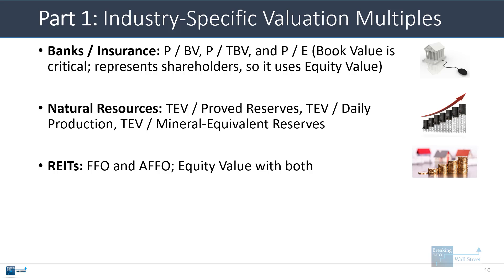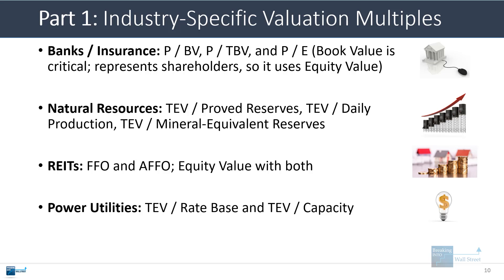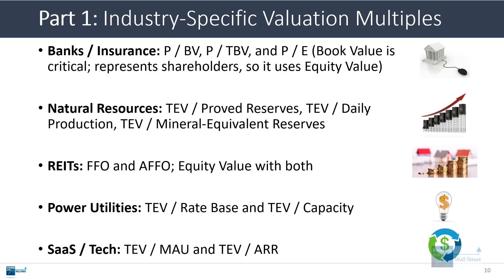With REITs, there are metrics like funds from operations and adjusted funds from operations. Both deduct net interest expense, so you pair them with equity value, not enterprise value. With power and utilities, you'll see enterprise value divided by the rate base — essentially how much a company can potentially earn with its assets under current utility laws — as well as enterprise value to total production or power production capacity. For SaaS and tech companies, common multiples include enterprise value to monthly active users and enterprise value to annualized recurring revenue, or ARR.